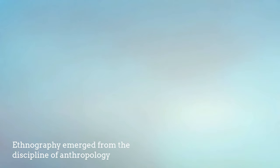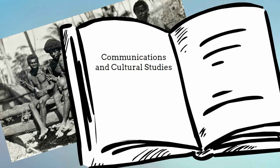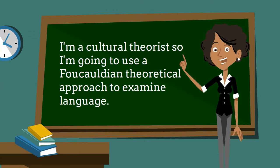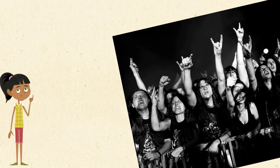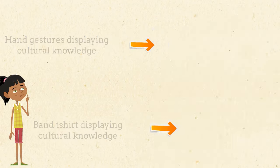Ethnography emerged from the discipline of anthropology, but spread into other academic disciplines such as communications and cultural studies, sociology, linguistics, and many more. As such, it is often coupled with or grounded in the theoretical approaches of each discipline. For example, one might conduct an ethnography of popular music fans to understand concert behaviour within a particular subculture, then couple the results with a theory informed by Pierre Bourdieu's cultural capital.